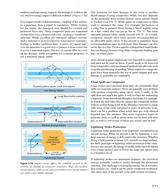Lightning Strike Protection. Lightning strike protection is an important consideration in aircraft design. When an aircraft is hit by lightning, a very large amount of energy is delivered to the structure. Whether flying a light general aviation, GA, aircraft or a large airliner, the basic principle of lightning strike protection is the same. For any size aircraft, the energy from the strike must be spread over a large surface area to lower the amps per inch to a harmless level. If lightning strikes an aluminum airplane, the electrical energy naturally conducts easily through the aluminum structure. The challenge is to keep the energy out of avionics, fuel systems, etc., until it can be safely conducted overboard.